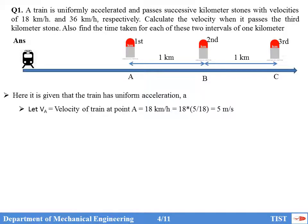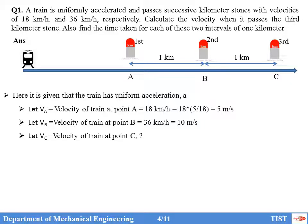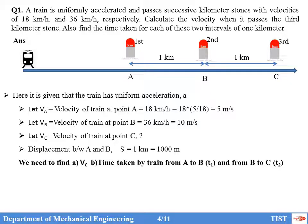Consider the first kilometer stone at location A, second at B, and third at C. The train has uniform acceleration. Let VA = 18 km/h = 5 m/s, VB = 36 km/h = 10 m/s, and VC is the velocity at the third kilometer stone. The displacement between each stone is S = 1 km = 1000 m. We need to find VC, time T1 from A to B, and time T2 from B to C.